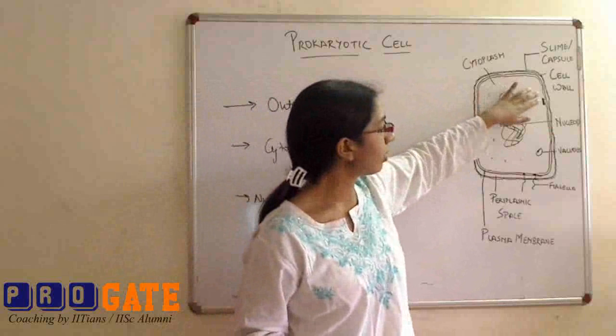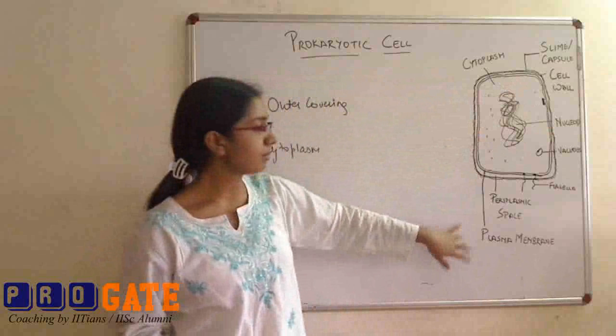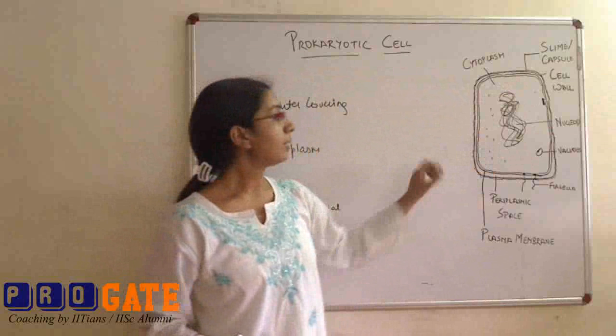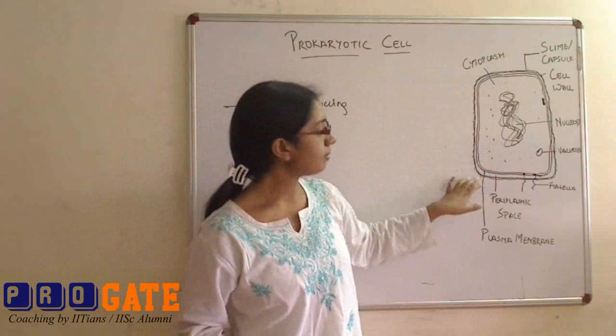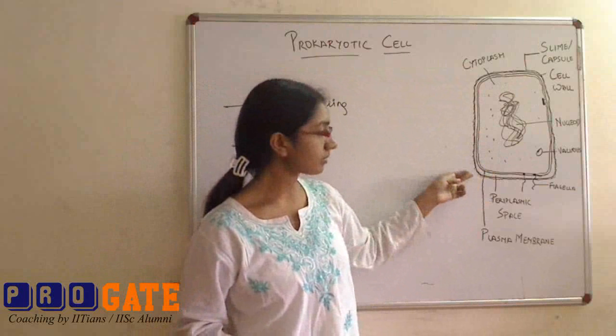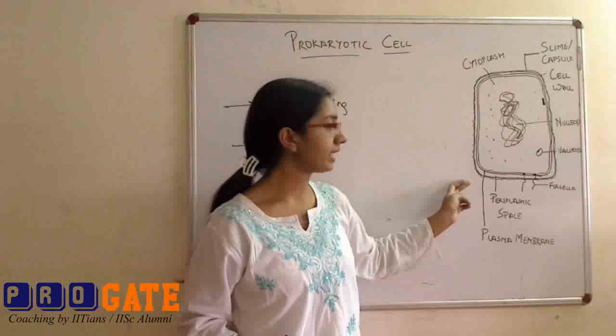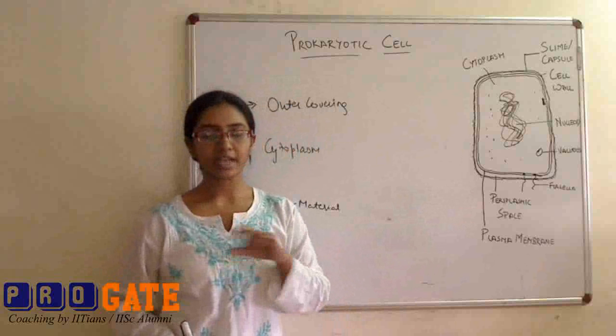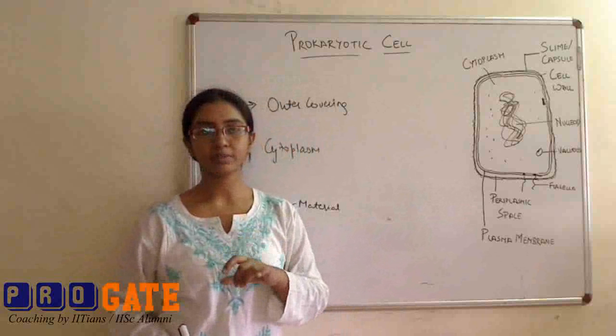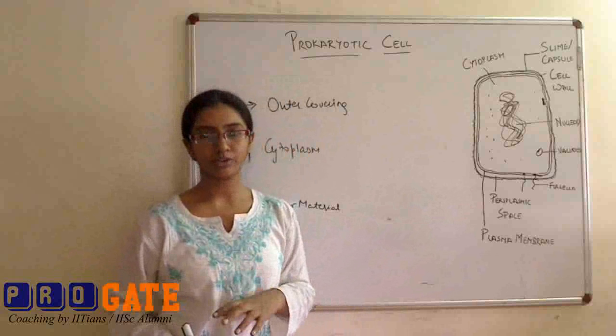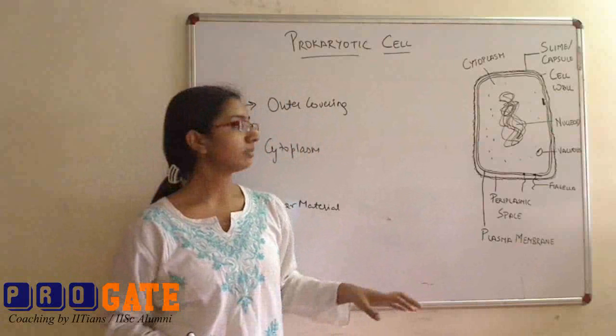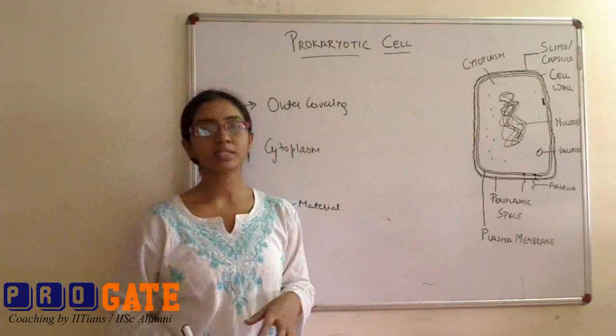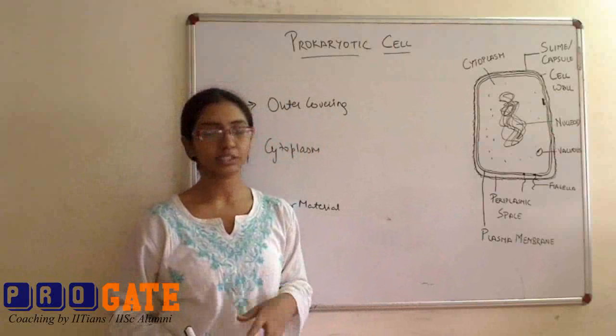Inside the cell wall, there is a plasma membrane, which is a bilayer that you already know about. Between the plasma membrane and the cell wall, we have a space called the periplasmic space. The width of the periplasmic space differs in different prokaryotic cells. In many kinds of bacteria, the periplasmic space may not exist at all.